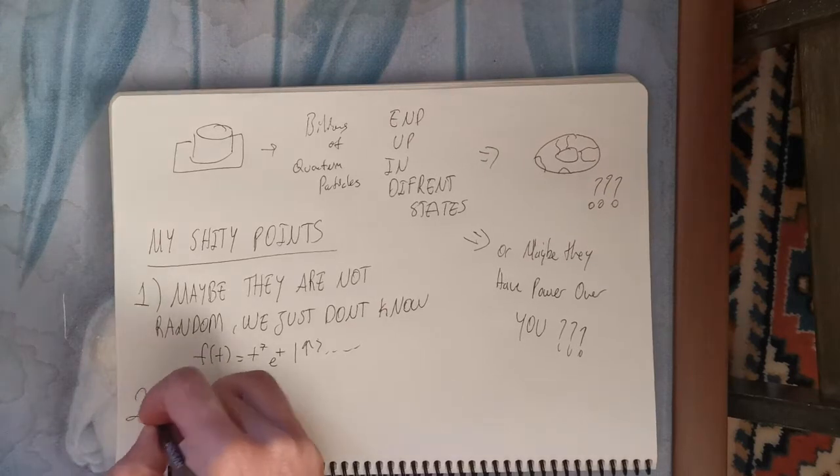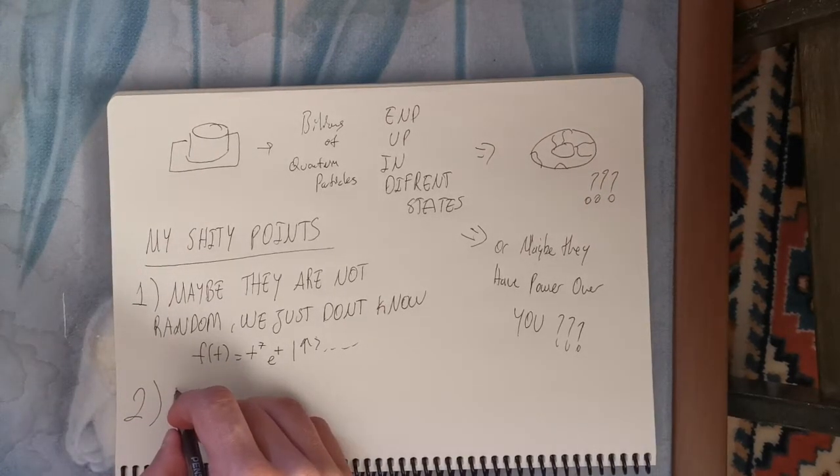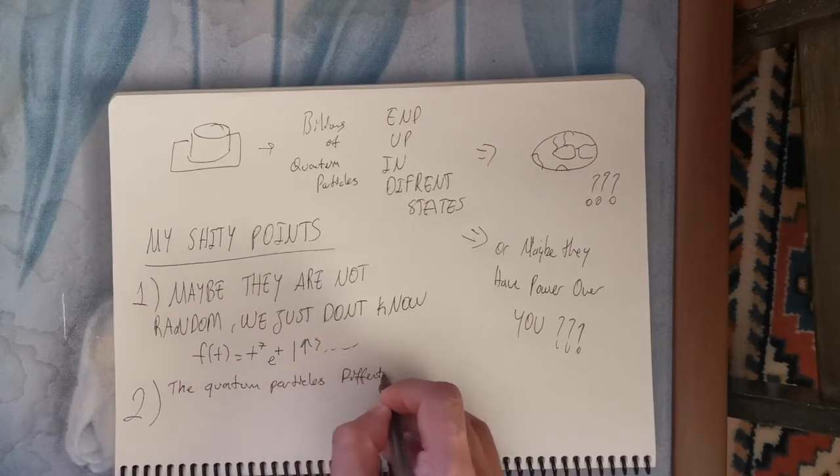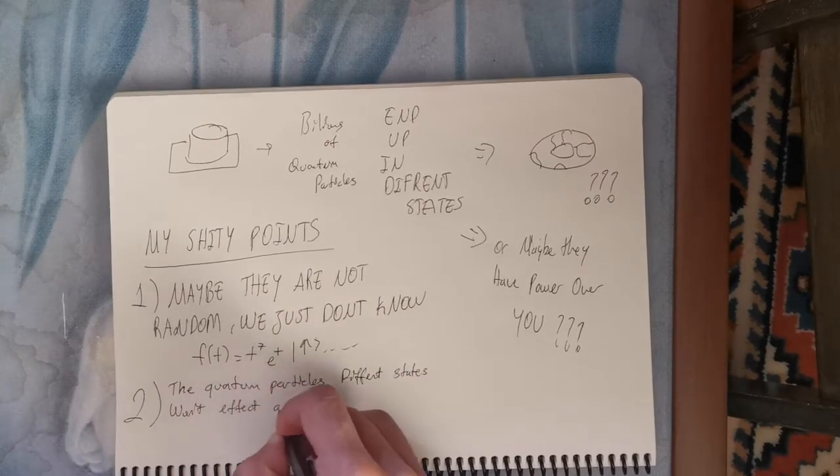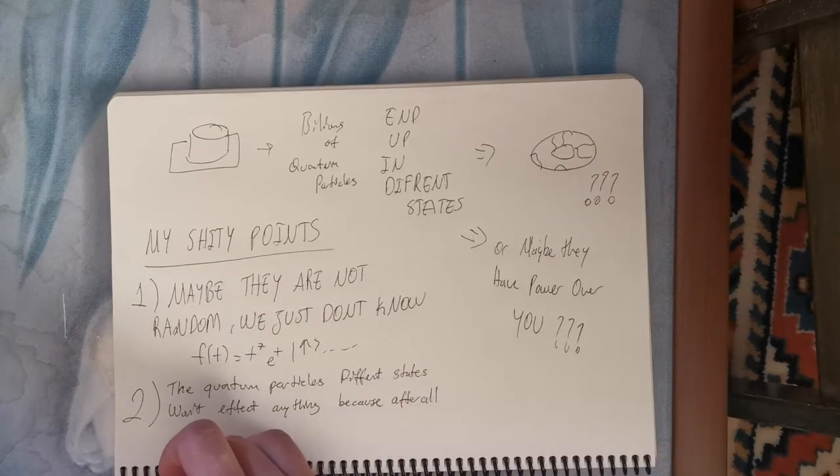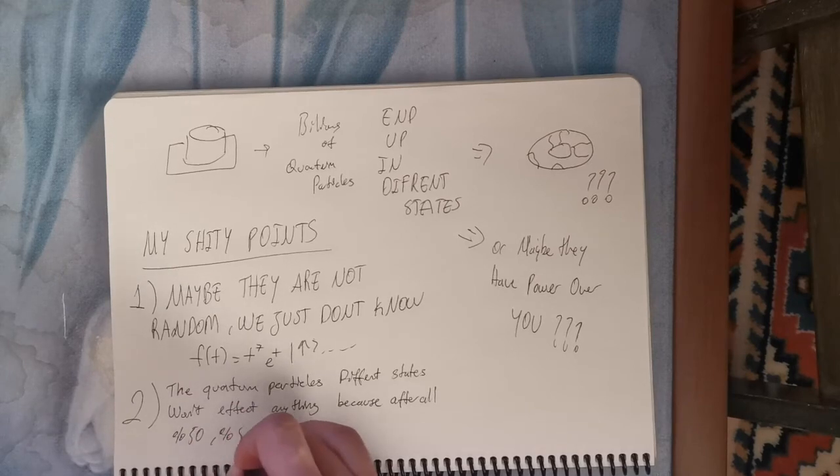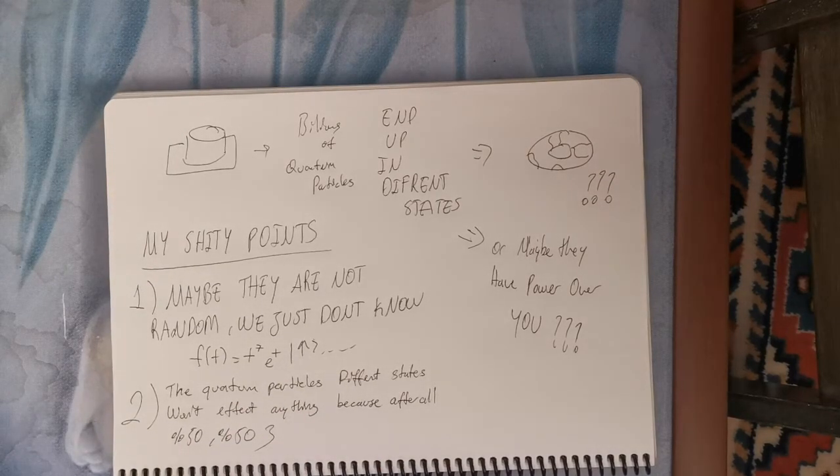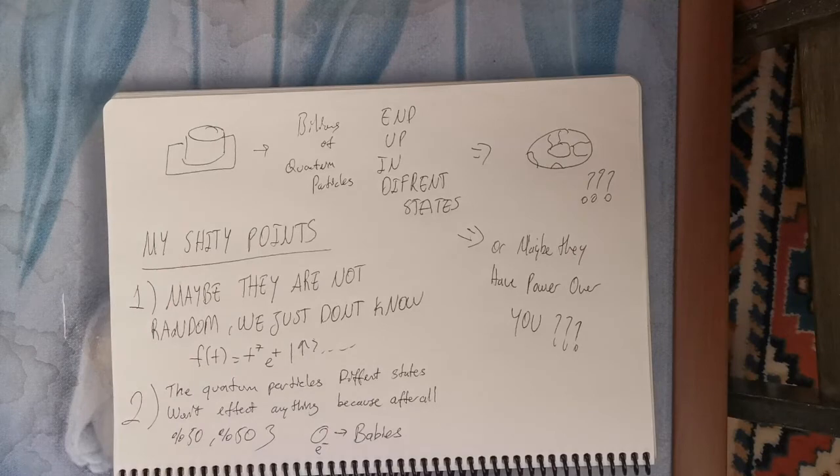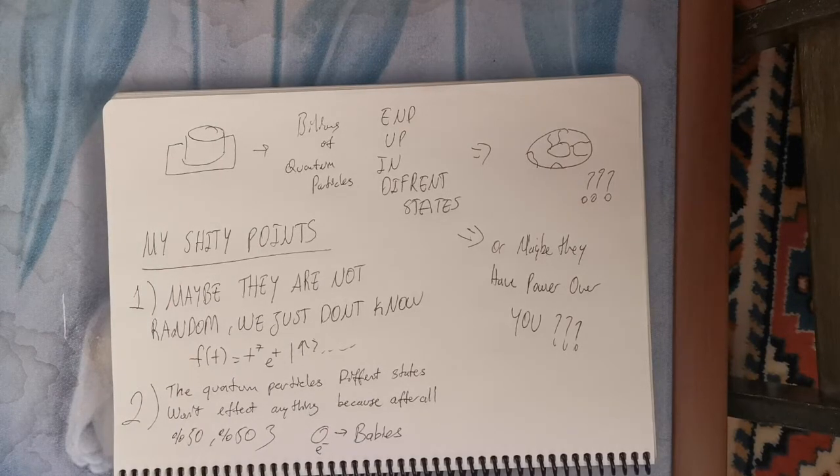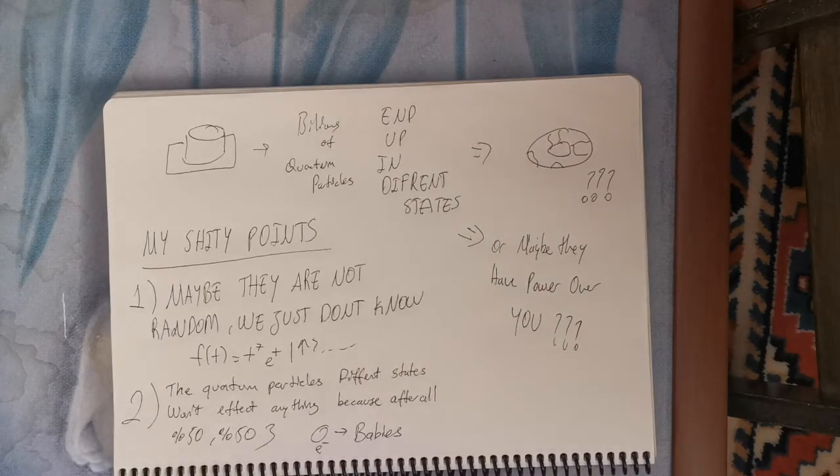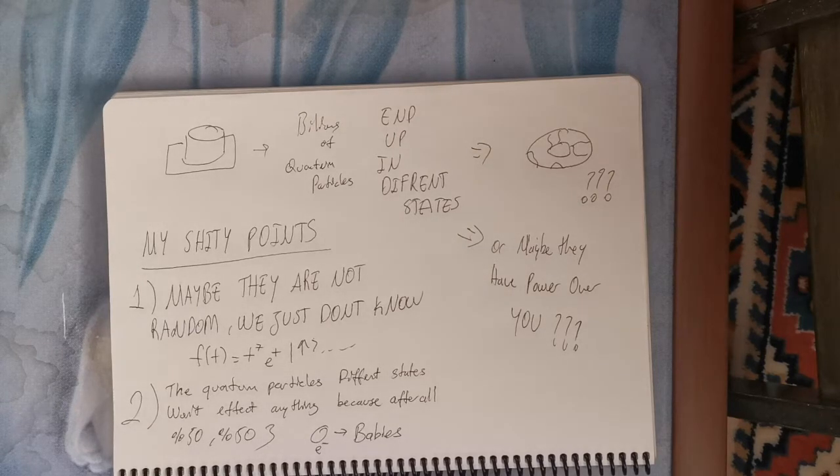Another big hole is that maybe quantum particles, different states, won't really have an effect on anything. After all, when it is 50-50, 50% of the particles will be up and the other 50 will be down. So there won't be a big difference. Even though some particles choose different states, overall, there will be 50-50. But there is a chance that 54% of the particles ends up in up and 46% of the particles ends up in down. And who knows? Maybe that will create a difference. But quantum particles are like babies to atoms. So overall, they don't have that much power. But, on my personal experience, there are some babies that can change their parents. So, let's just hope that.